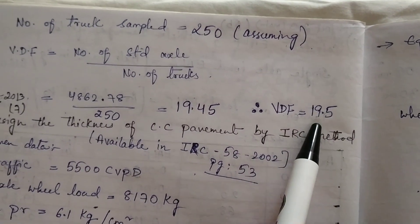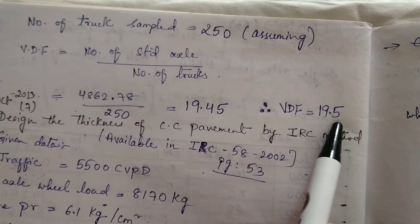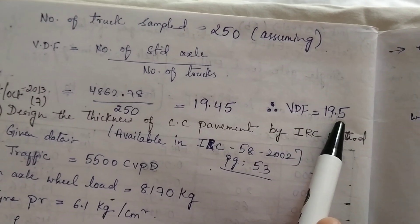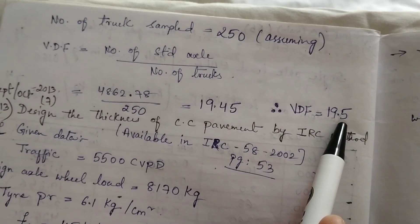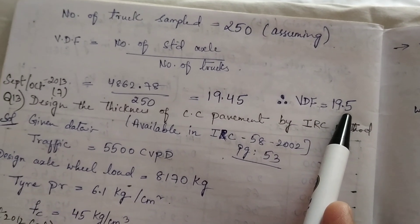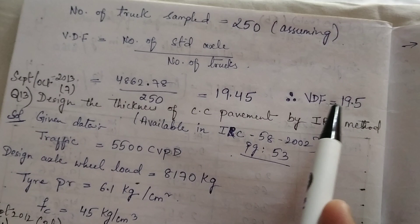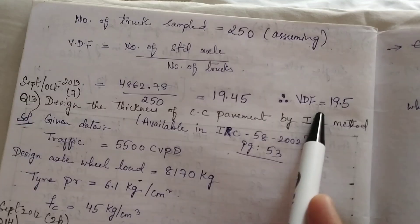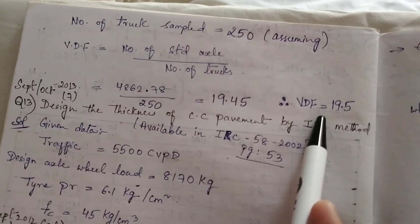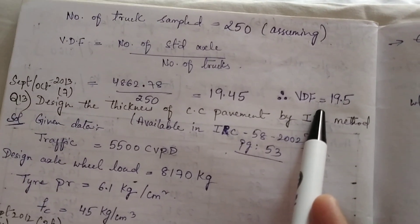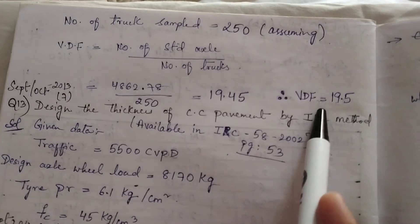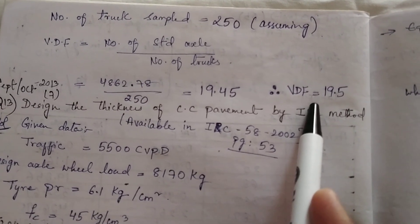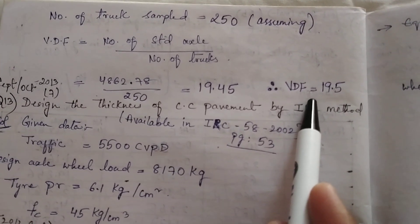Remember: VDF has no units — it is a factor. I hope you now have a clear idea about how to find EALF and VDF. Thank you.